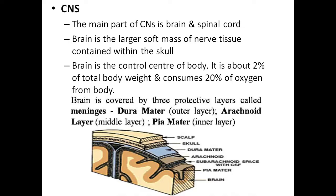The brain is covered by 3 protective layers called meninges. These are: the dura mater — the outer layer, the arachnoid mater — the middle layer, and the pia mater — the inner layer.